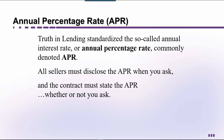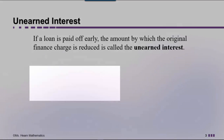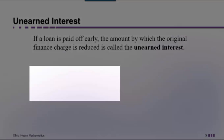Now let's get back to unearned interest. If a loan is paid off early, remember, the Consumer Credit Protection Act says that we need to know how much we get back. The amount by which the original finance charge is reduced is called the unearned interest. There are two common methods of calculating unearned interest: the actuarial method and the rule of 78.